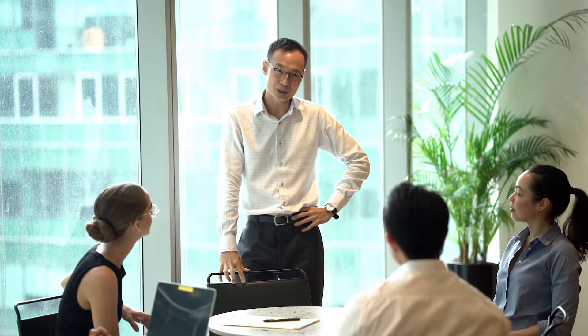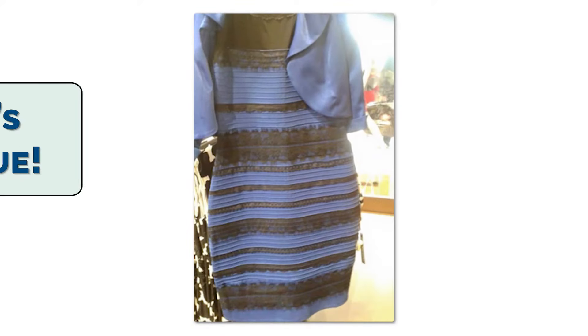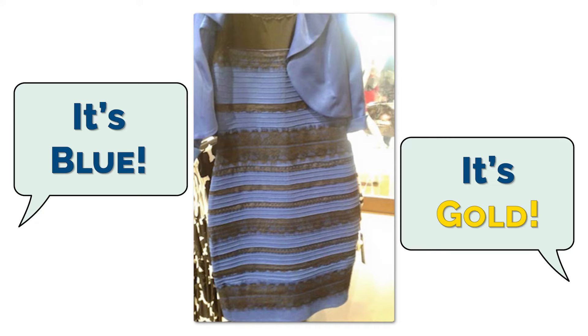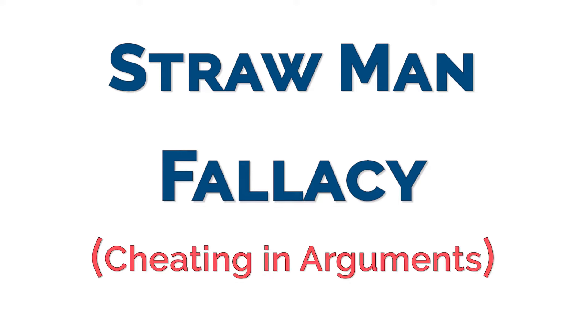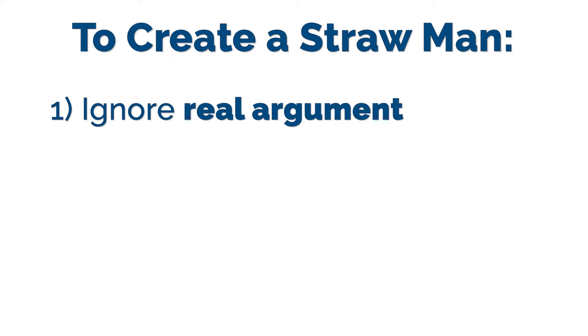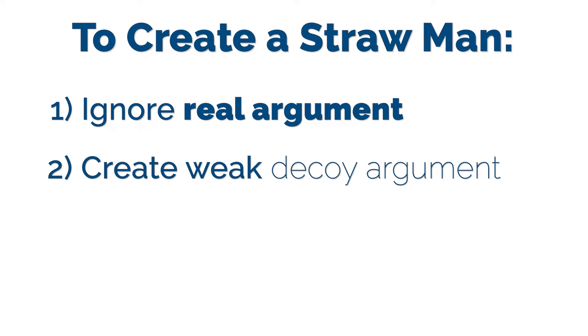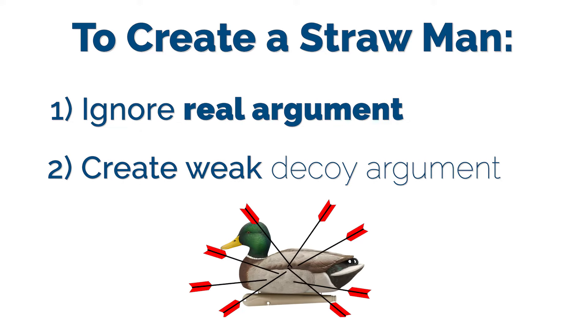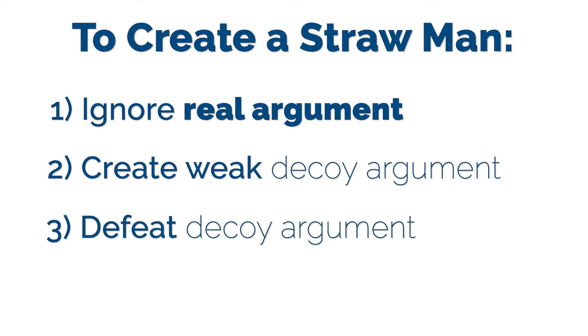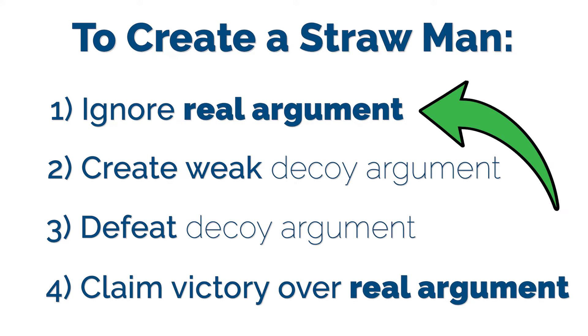When discussing ideas or arguing about whatever it is you may argue about, this rather common charade is known as a strawman fallacy — a clever name for cheating in arguments. Creating one is simple: take an argument, whatever it may be, and change it to a weaker, easier-to-defeat decoy argument. After debunking the decoy, claim victory over the original argument.